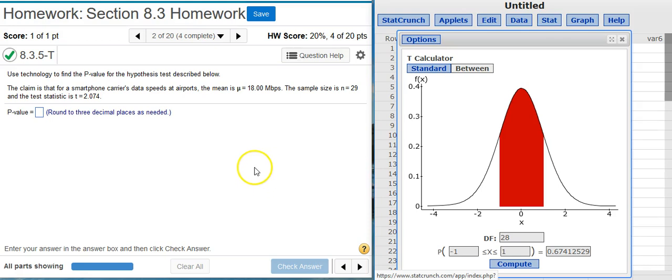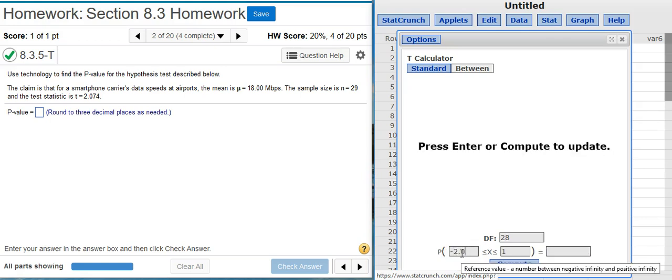So now I've got two test statistics. One is going to be positive, the other is going to be negative. So I'm going to put those values in here. Now I've got everything that I need. I go ahead and hit compute.